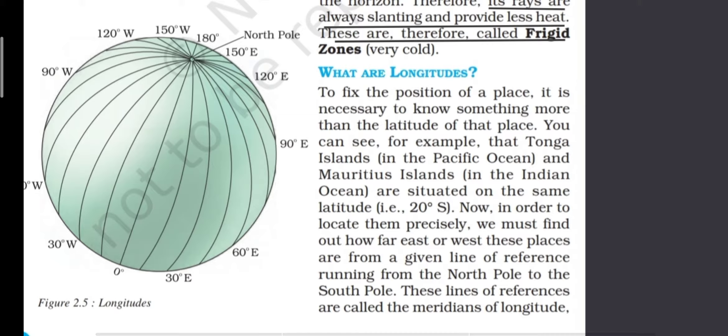Just as the equator divides the earth horizontally into two equal halves — the northern hemisphere and southern hemisphere — in the same way the prime meridian is a longitude that divides the earth vertically into two halves: the eastern and western hemisphere. The value of the prime meridian is 0 degrees.